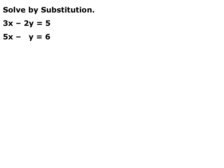I'm going to solve the second equation for y. I moved y over and isolated it, and I have y equals 5x minus 6. Now I'm going to take this and plug it in for y in the first equation. Make sure you plug it into the other equation, otherwise everything is just going to cancel out. So y equals that, so you can substitute it into the other equation.